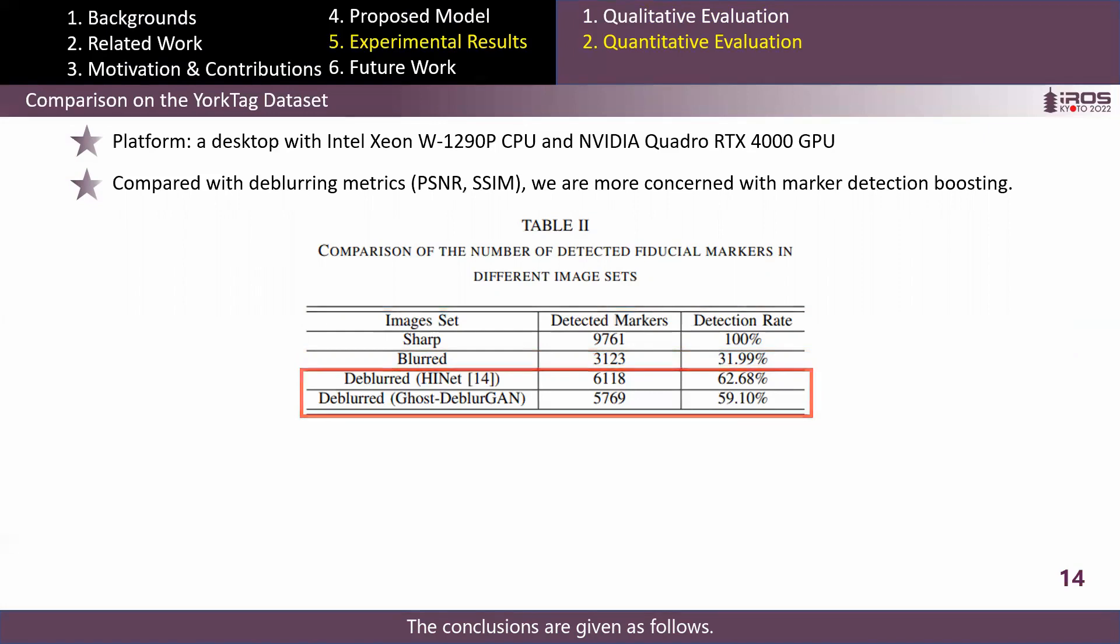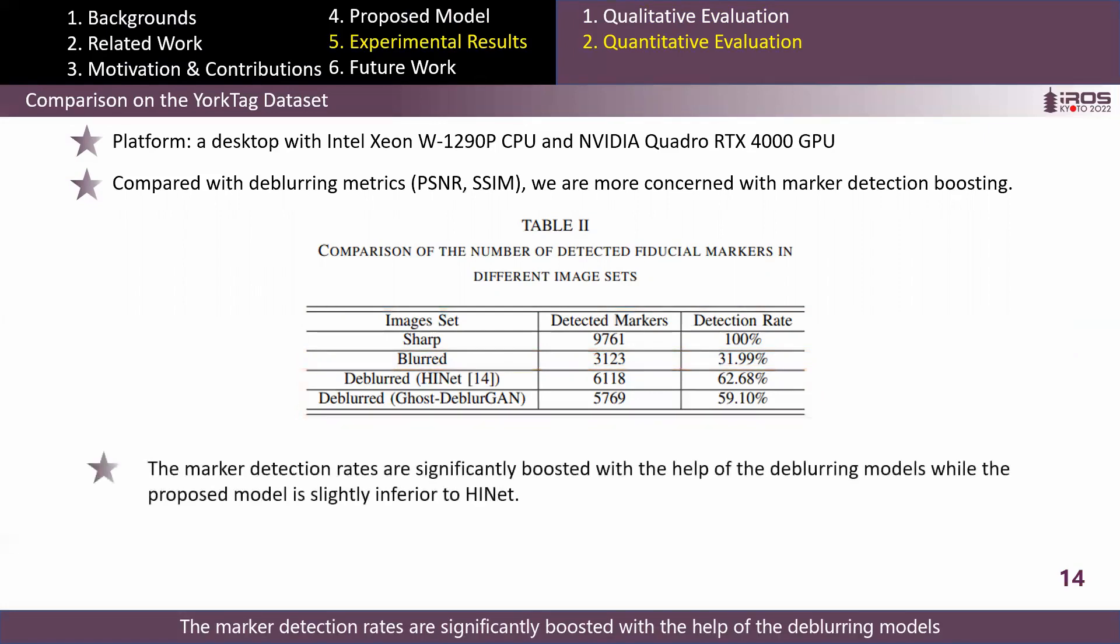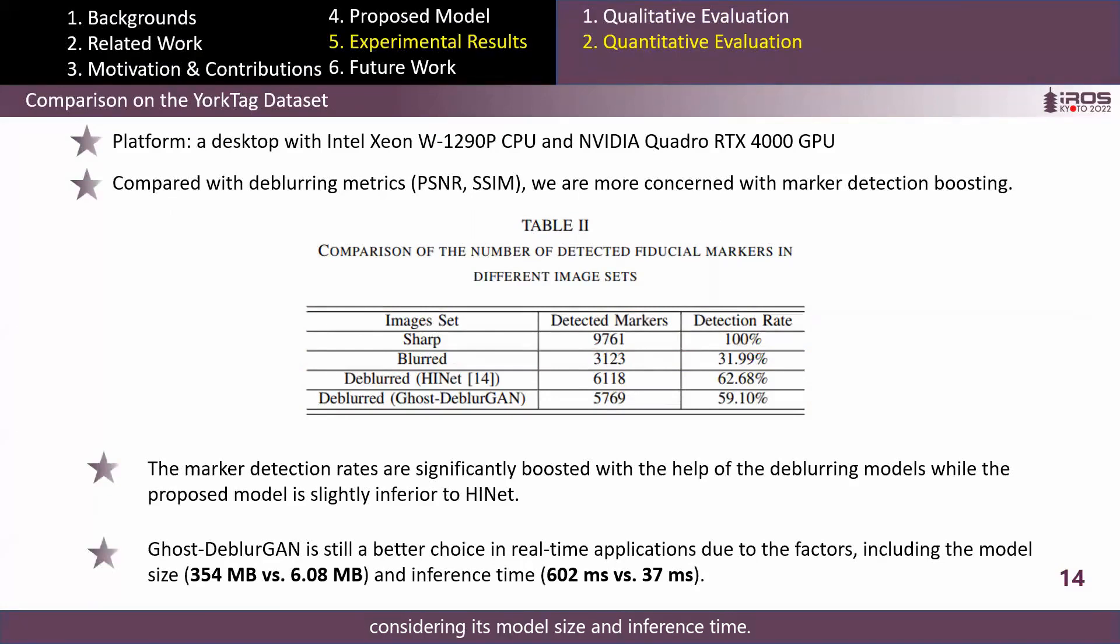The conclusions are given as follows. The marker detection rates are significantly boosted with the help of the deblurring models, while the proposed model is slightly inferior to HINet. But the proposed model is still a better choice in real-time applications considering its model size and inference time.